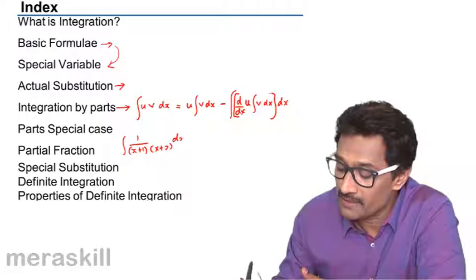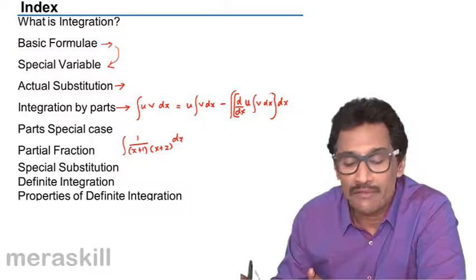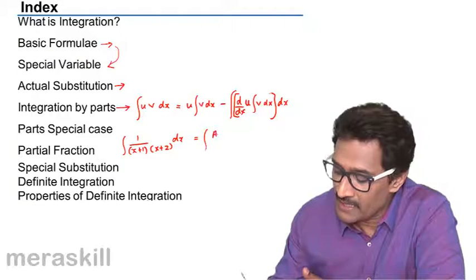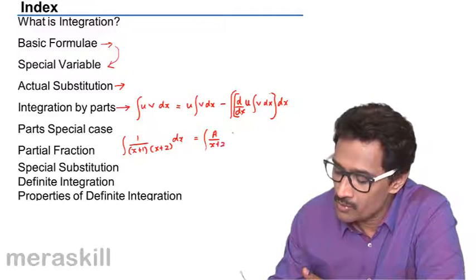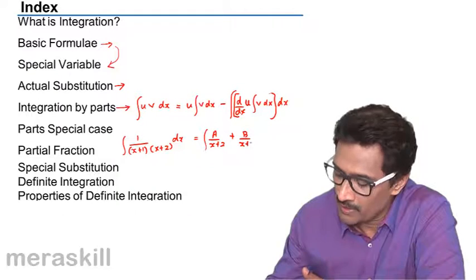How do we do? How do you find the integral of this? So we will convert this as a upon x plus 2 plus b upon x plus 1.